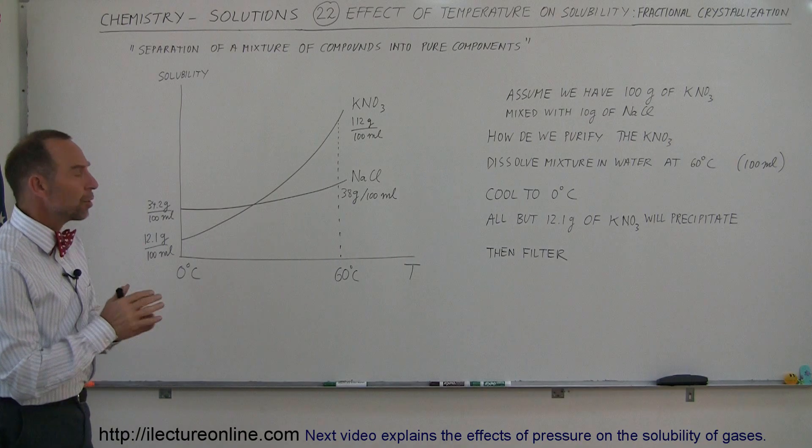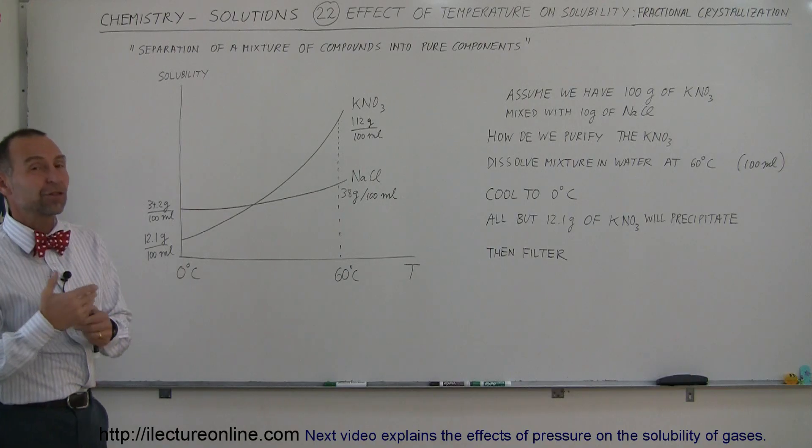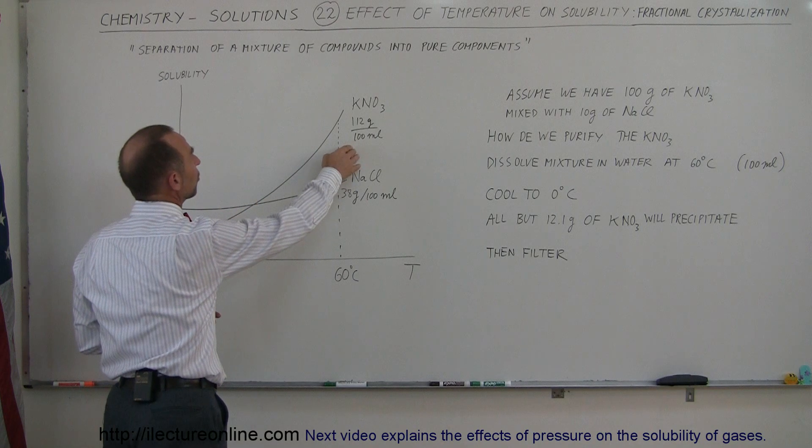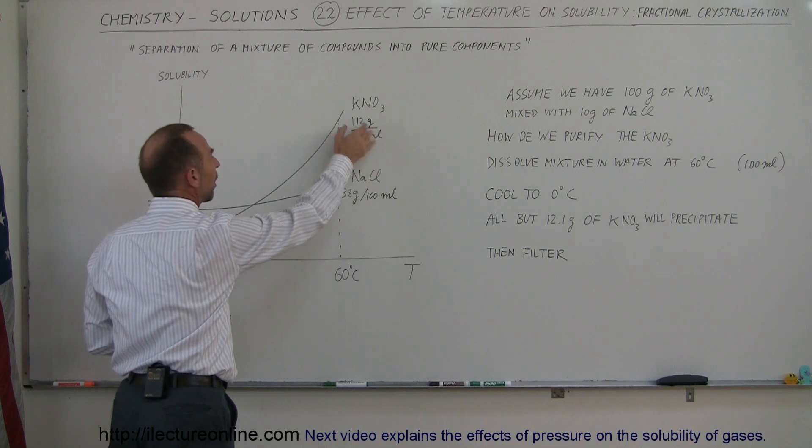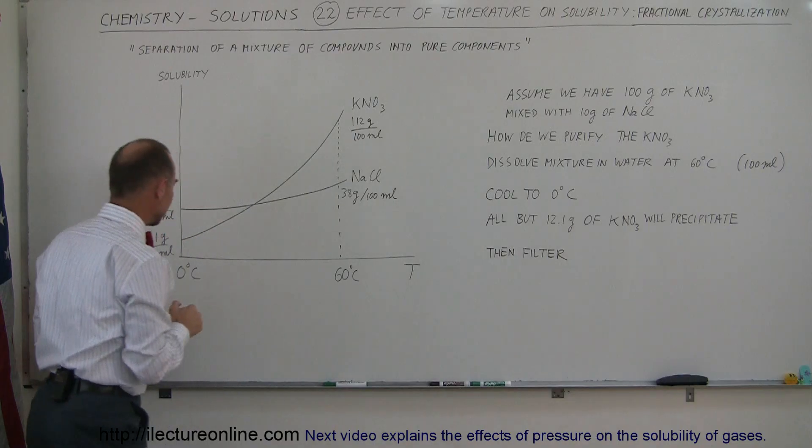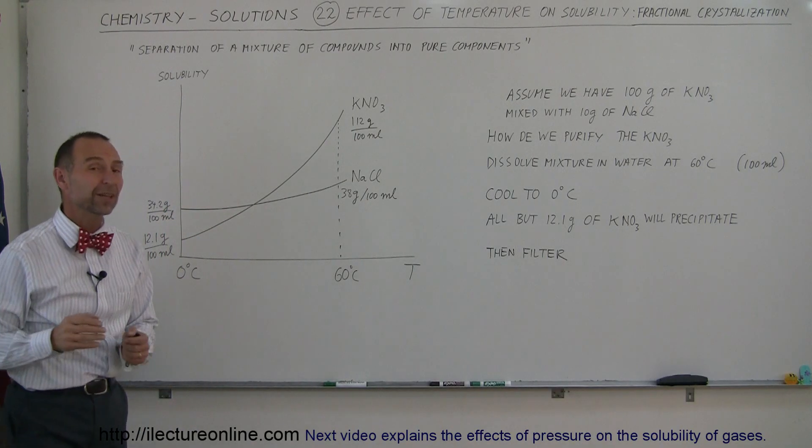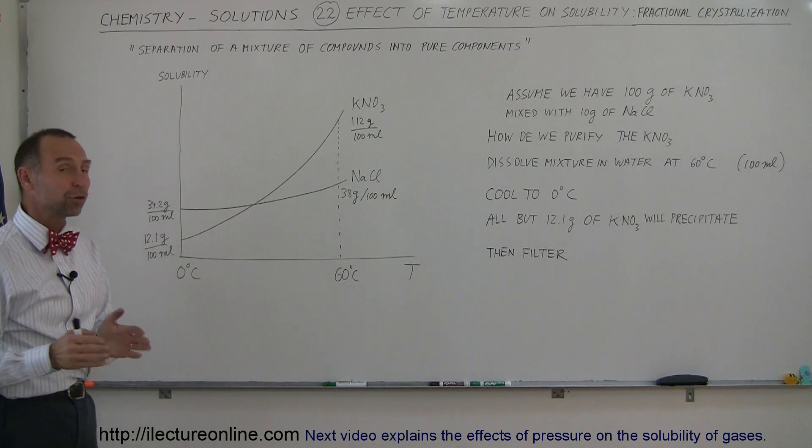We know that some compounds are affected a lot by temperature as far as solubility is concerned. For example, potassium nitrate. We can dissolve 112 grams of potassium nitrate in 100 milliliters of water when the temperature is 60 degrees centigrade, and when the water is zero degrees centigrade, we can only dissolve 12.1 grams of potassium nitrate per 100 milliliters of water. So you can see that's a huge difference.